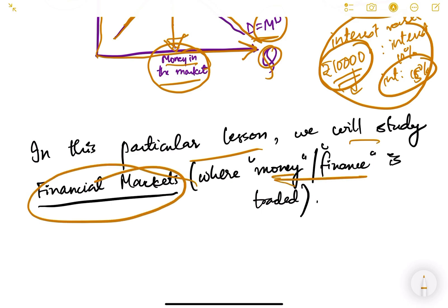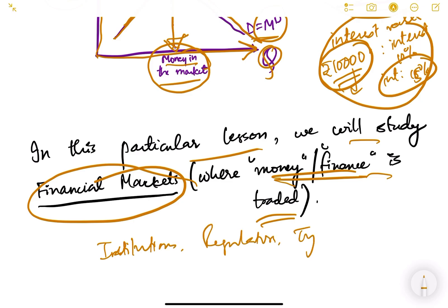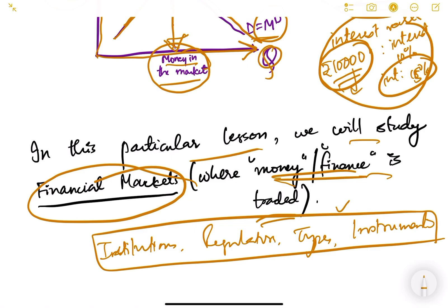We will study financial markets in detail in this lesson — covering different institutions, regulators, types, and instruments used in financial or money markets. We will begin from the next video of lesson number 11. Keep it up and we will come up with the next lesson very soon. Thank you.